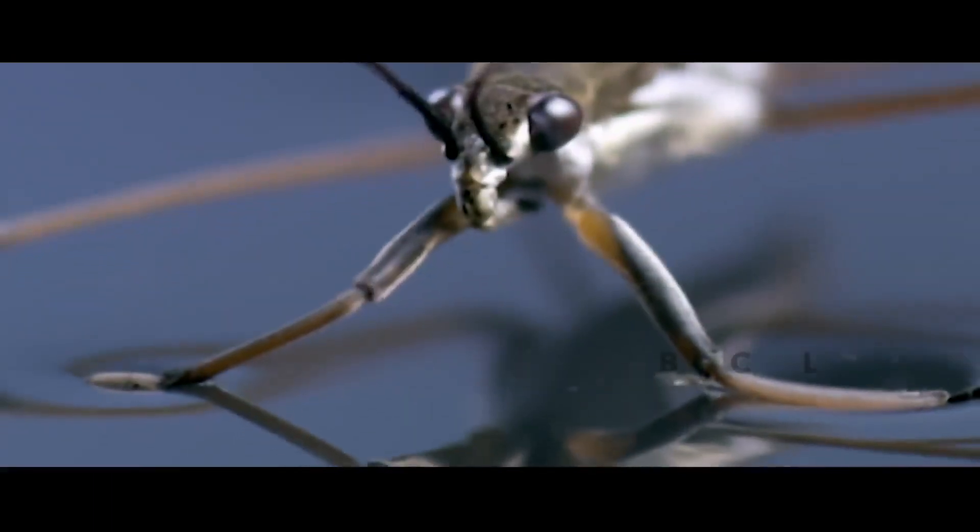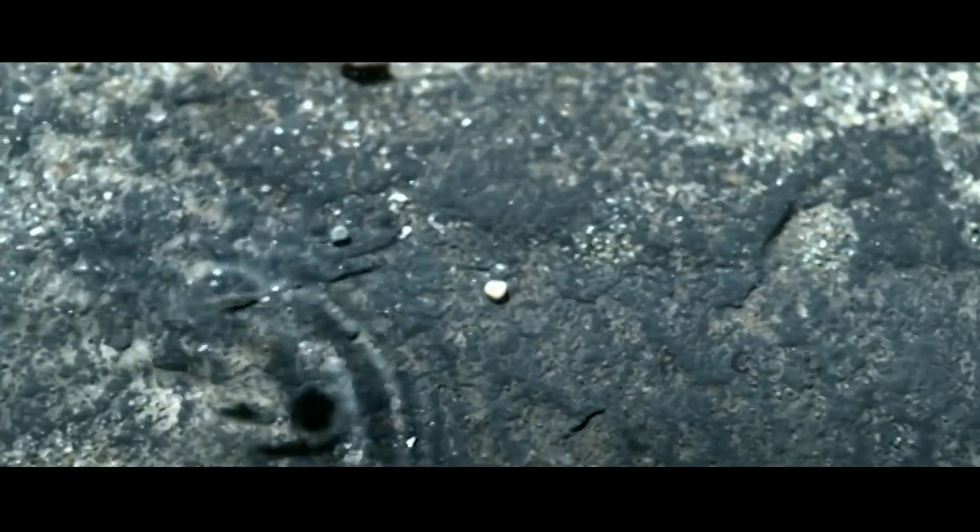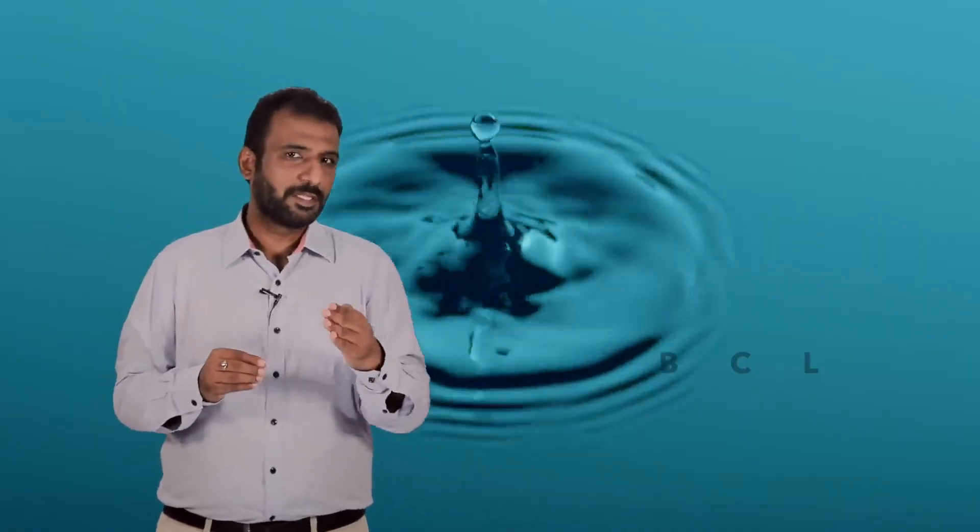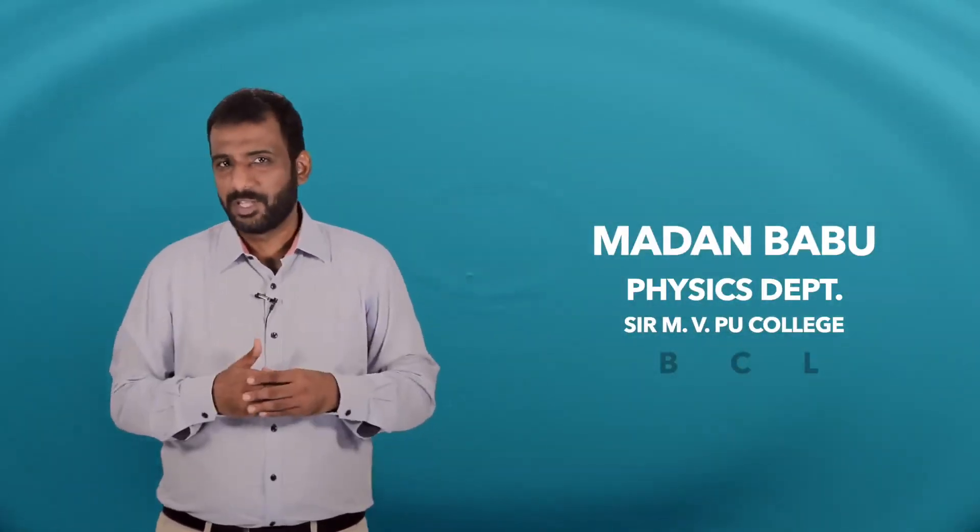So when you see them very closely, they don't wet their body when they are on the water surface. In fact, you can actually see some small dimples on the surface of water. So that might be the curved part of the water surface which helps to balance the insect's weight. But we have not seen any mosquito drowning. That is not part of our experience.